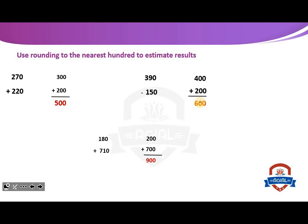Use rounding to the nearest 100 to estimate results. We have 270: the tens place is 7, so we increase the hundreds by 1 — 270 rounds to 300. Plus 220: the tens place is 2, so we convert tens to 0 and keep the hundreds — 220 rounds to 200. So 300 plus 200 equals 500.